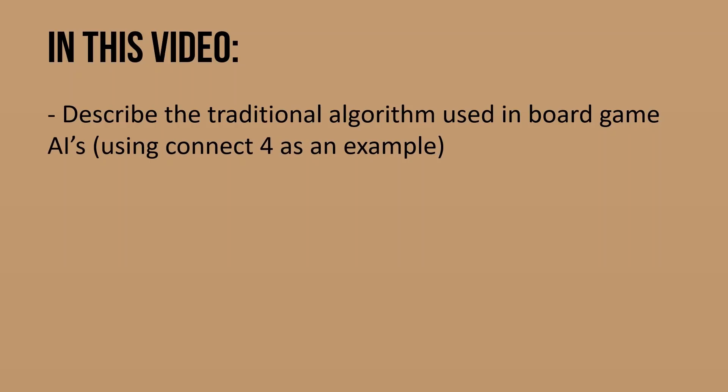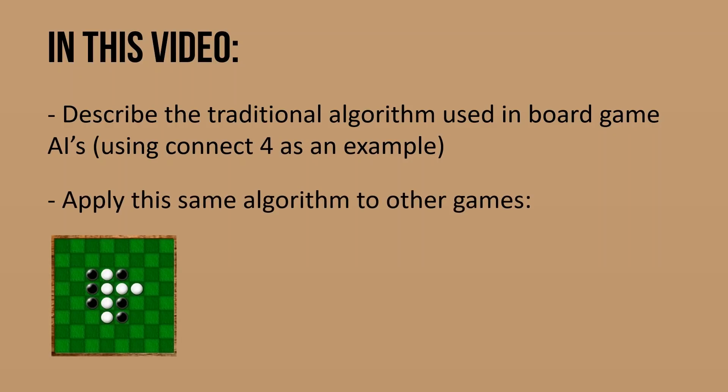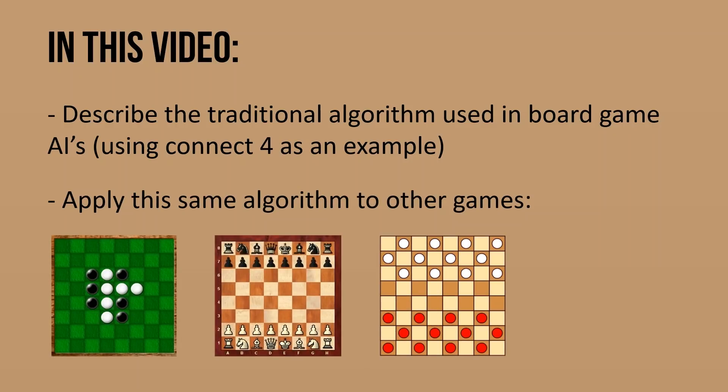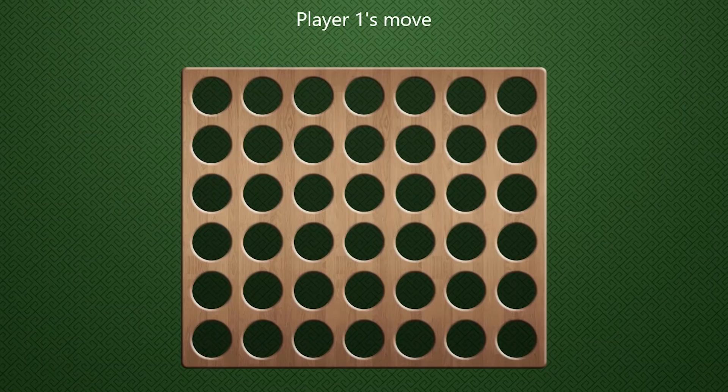And then next, we'll apply this same algorithm to other games, such as Othello, Chess, and Checkers. Okay, to begin, let's simulate what a very simple AI would look like. And to do this, I'll be player one, and our very simple AI will be player two, and we'll just pick one of these random columns to drop the piece in.